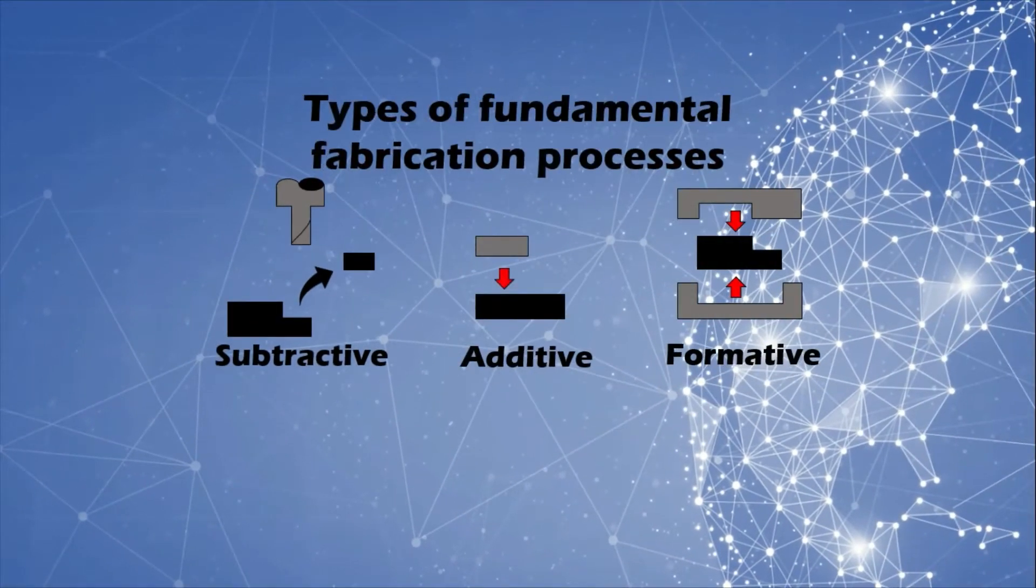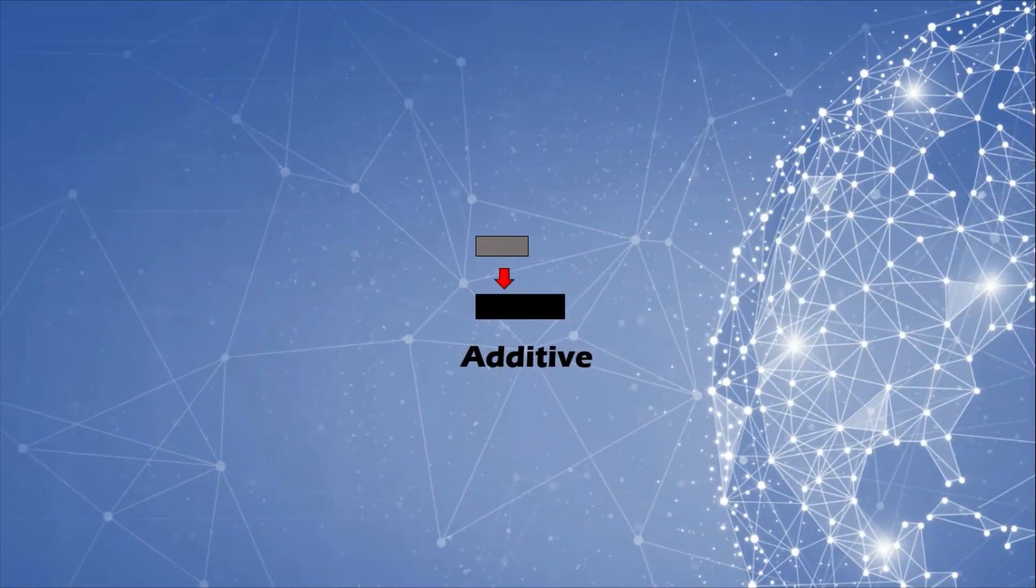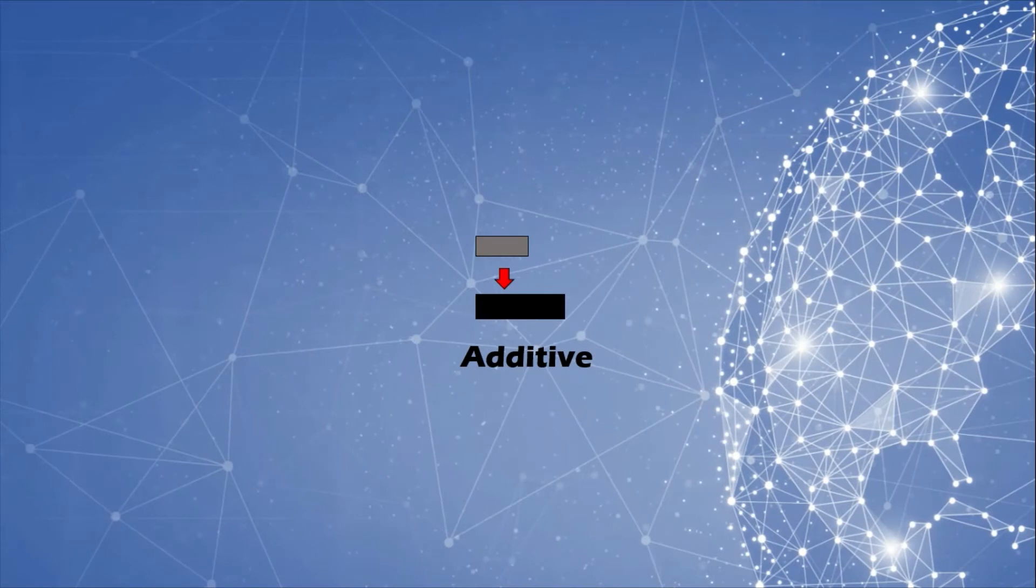Whereas an additive process is the exact reverse, in which the end product is much larger than the material when it started.